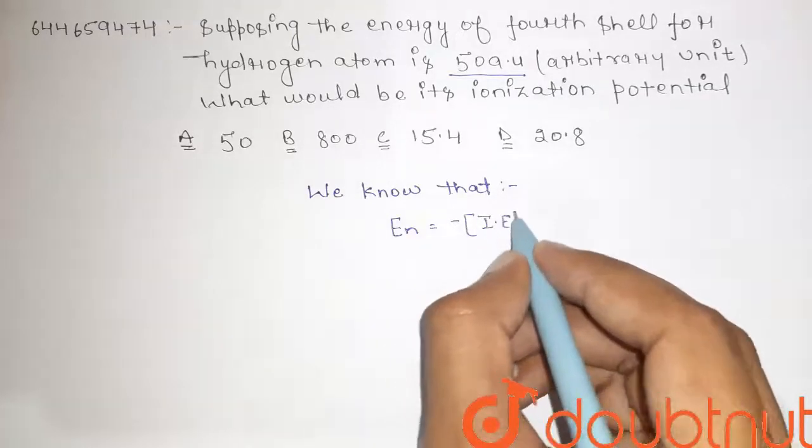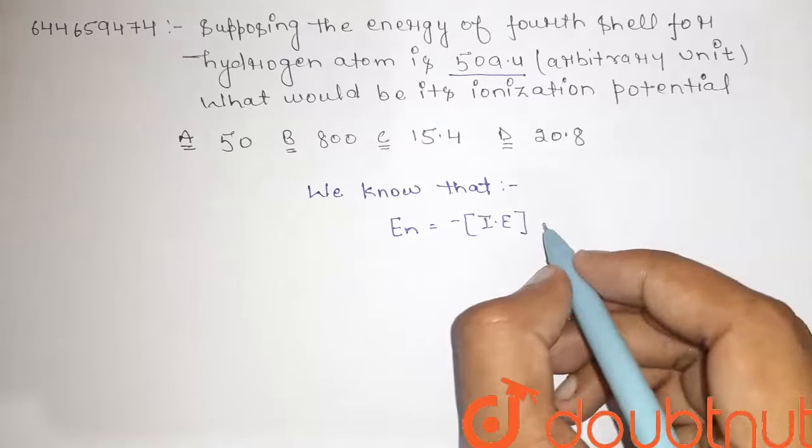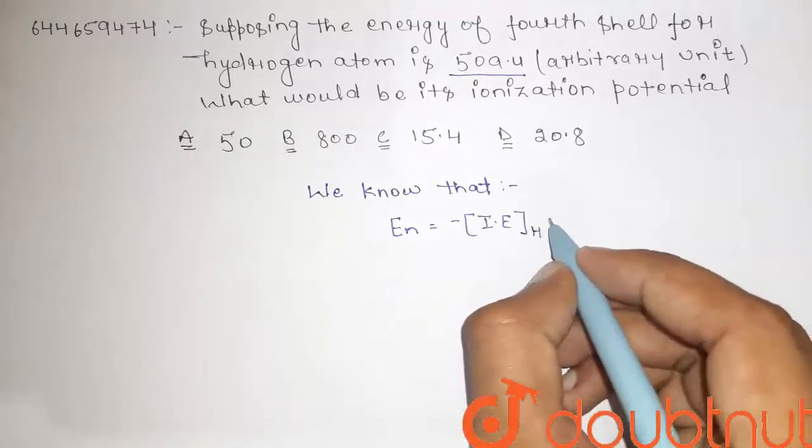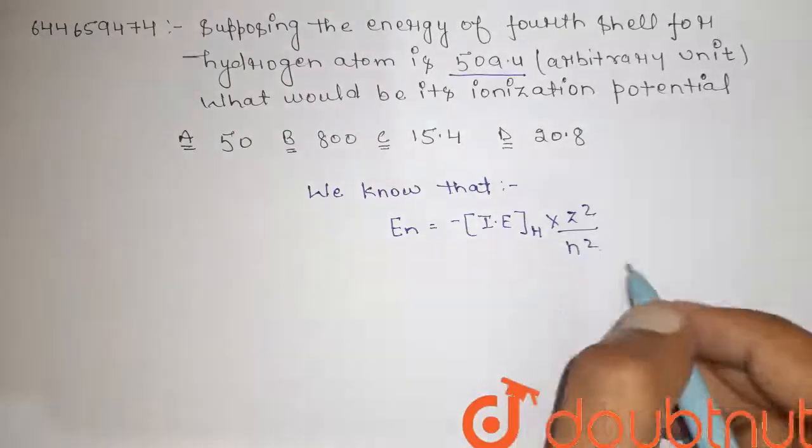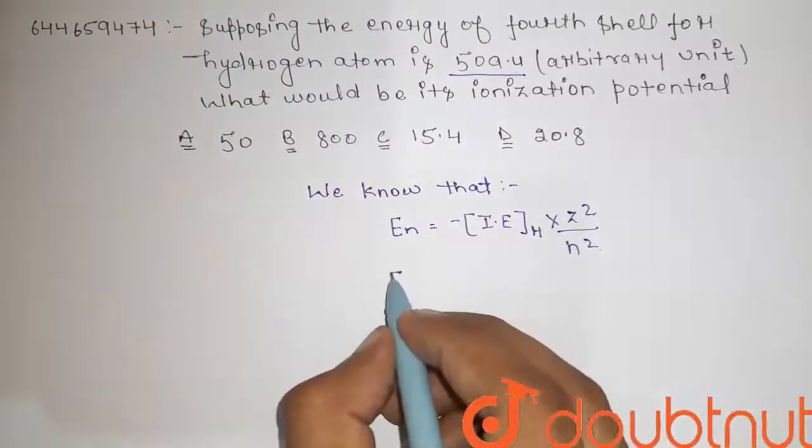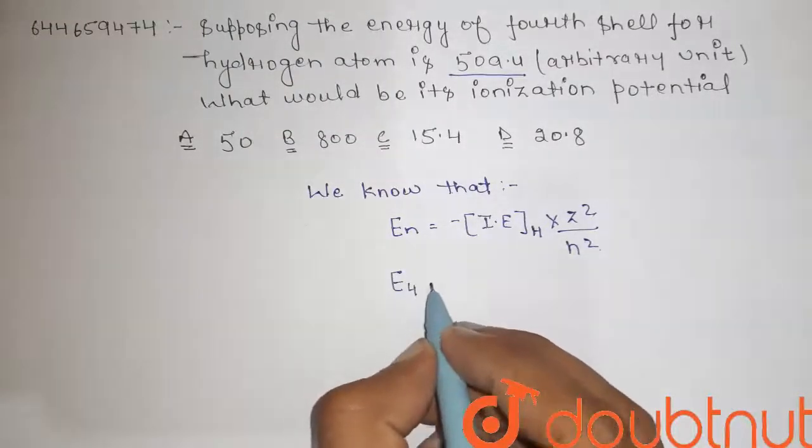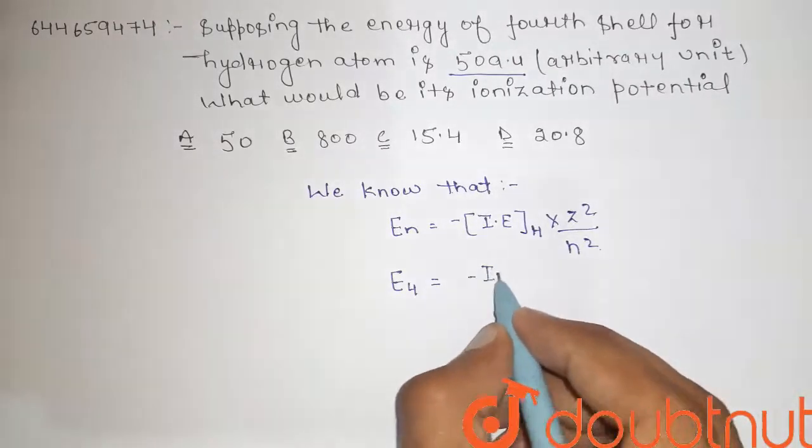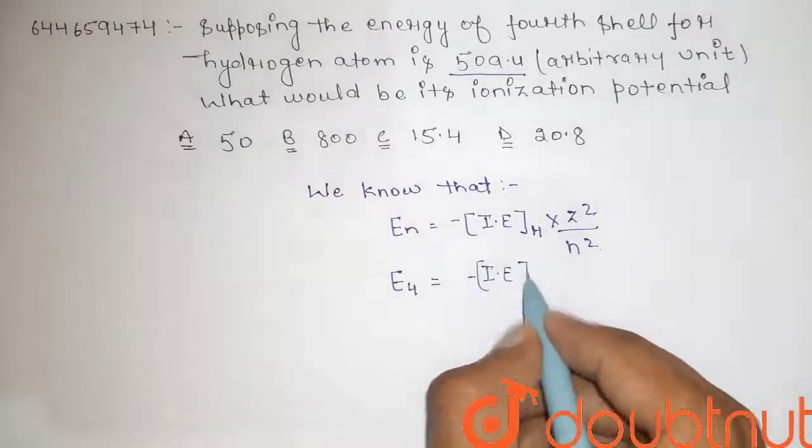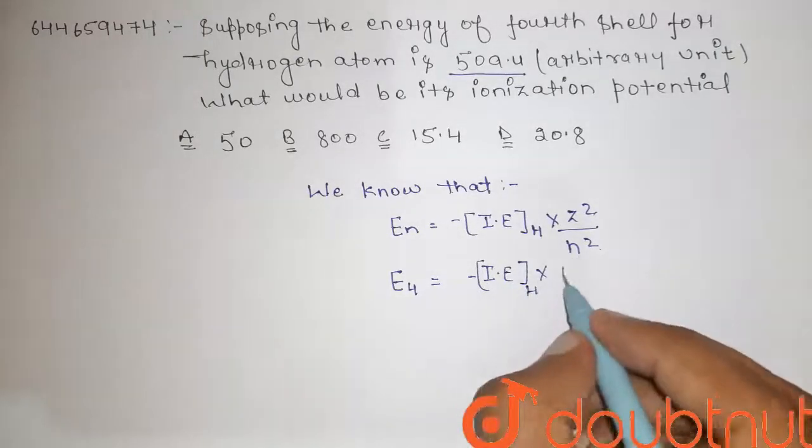So guys, we know that the energy for nth orbit is given as En = -(I.E.)H × Z² / n². According to the question, energy for fourth shell, that is equal to minus of ionization energy of hydrogen atom into Z² that is one divided by n².